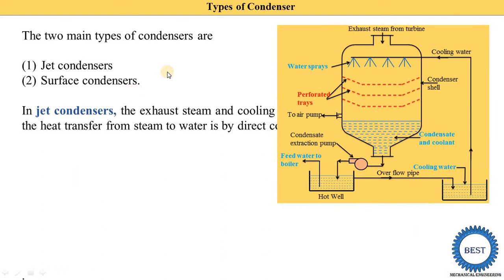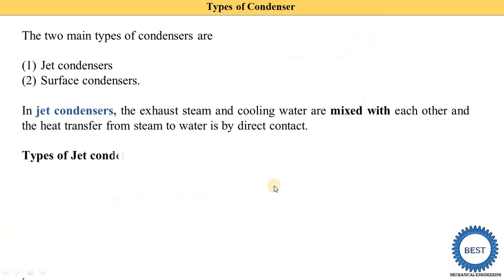Here you can see one type of jet condenser. From the top, the exhaust steam from the turbine is supplied, and the cooling water is sprayed inside the condenser shell. The exhaust steam and the cooling water are mixed and converted into condensate, which is collected at the bottom part of the condenser shell.